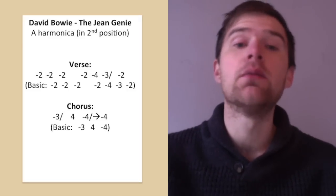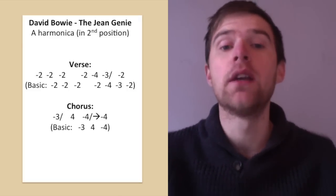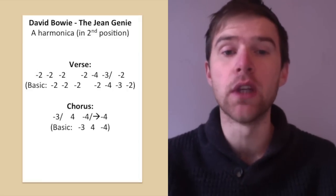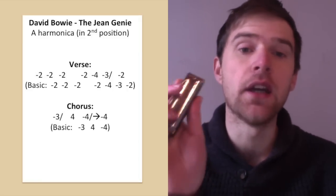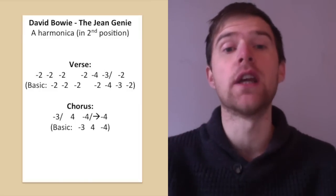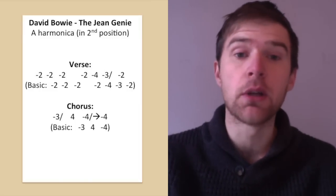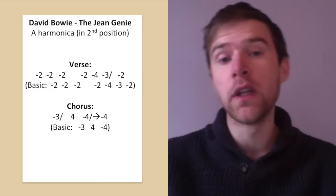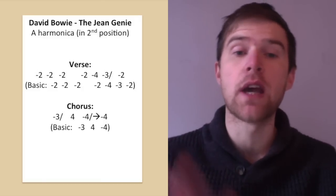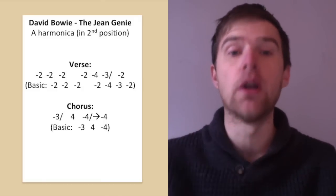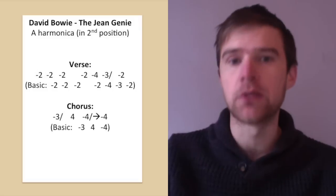Now, the song's in E, which means we need an A harmonica. If you don't know about different keys, don't worry, just know that you need an A harmonica. If you haven't got an A harmonica, if you've only got a C harmonica for example, don't worry, you can still stick around because the tab will still apply for you if you want to play it at home on your own, you just won't be able to play it along with the record.